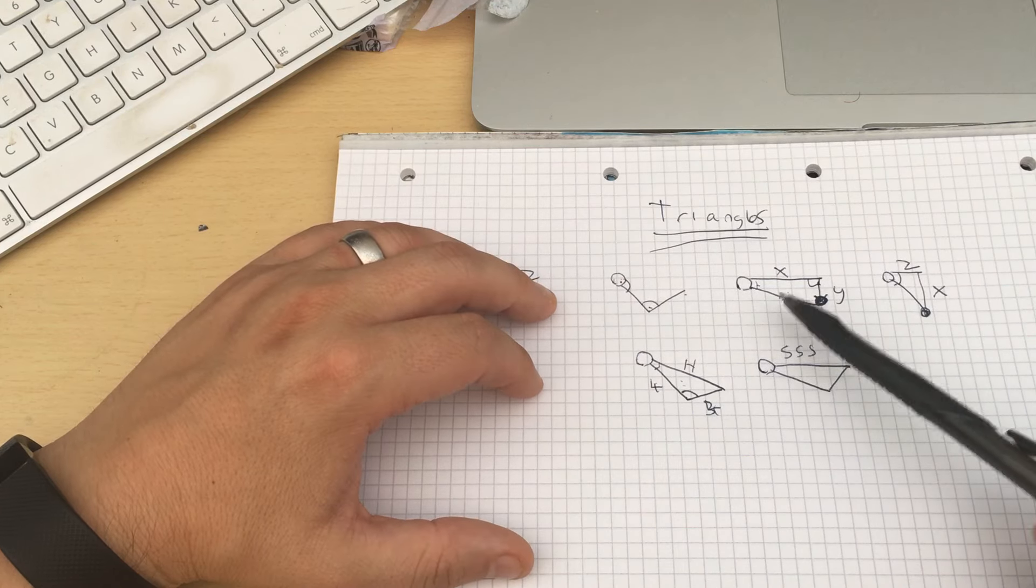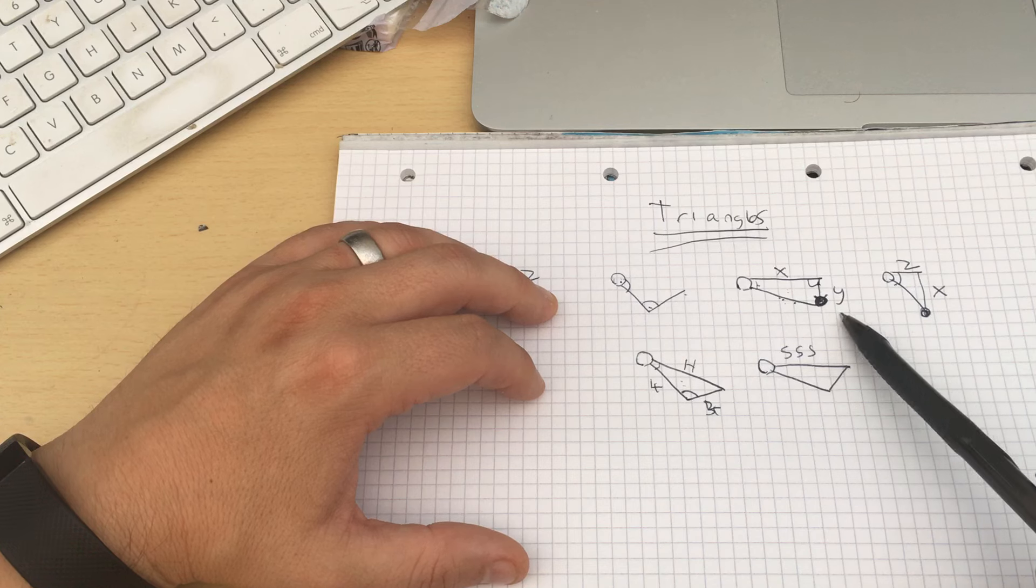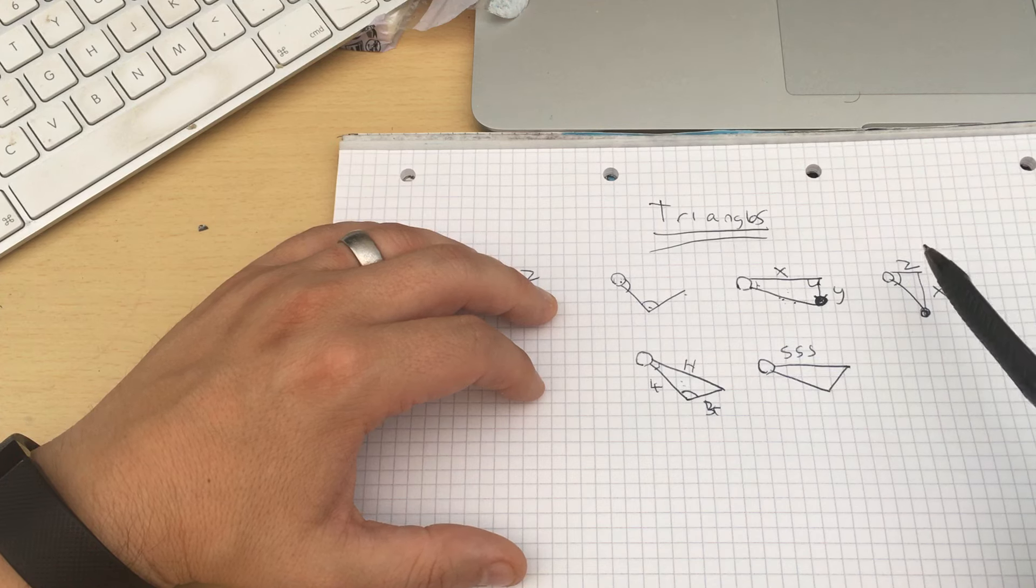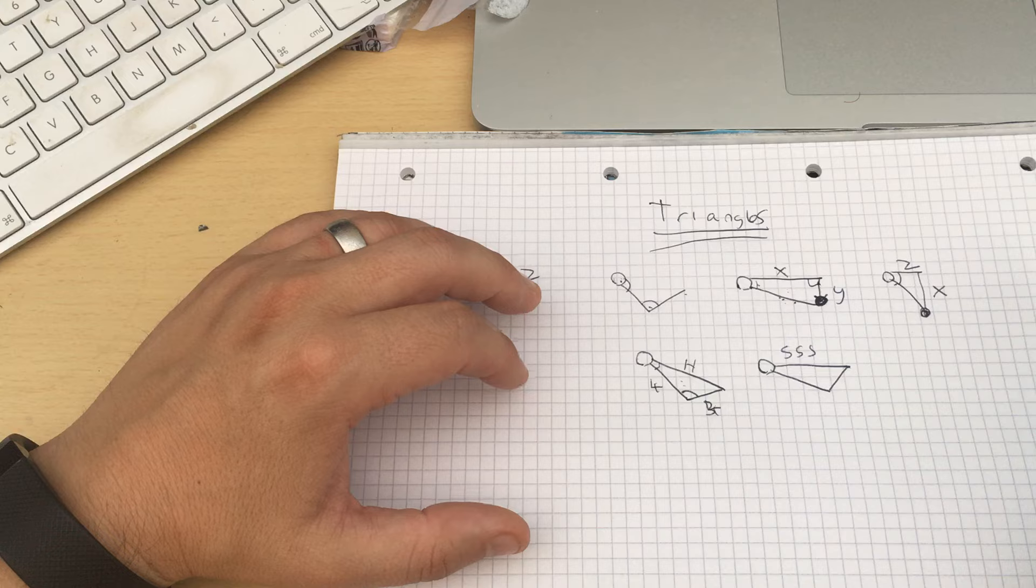You also have the hypotenuse because you know what the X and the Y is, so how far out you're reaching and how far down or to the side.